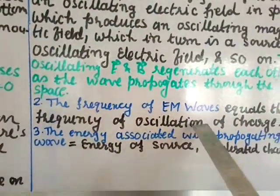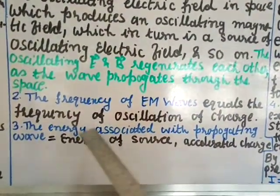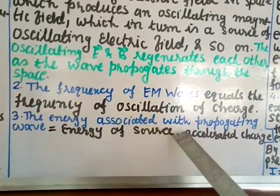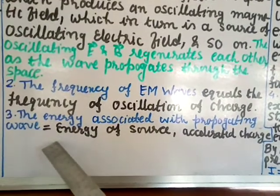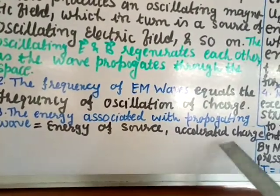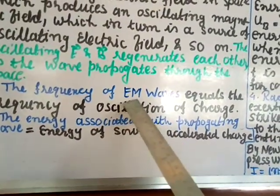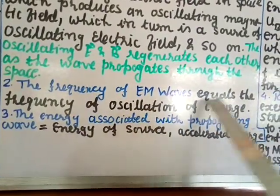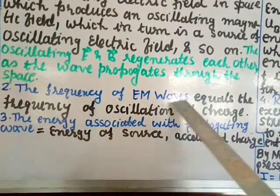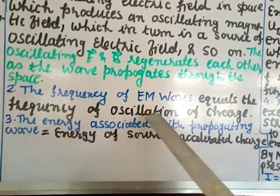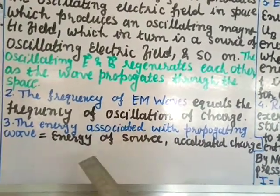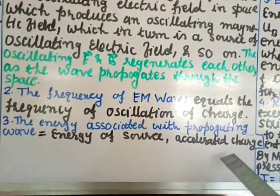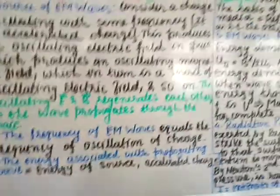The frequency of EM waves equals the frequency of oscillation of the charge. The energy associated with the propagating wave equals the energy of the source, that is the accelerated charge. So the EM wave has both frequency and energy: the frequency of the EM wave equals the frequency of the oscillating charge, and the energy of propagation of the wave equals the energy of the accelerated charge.